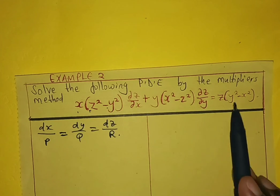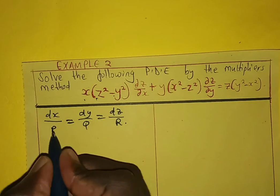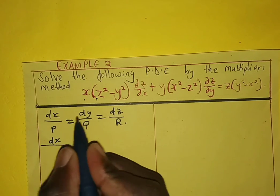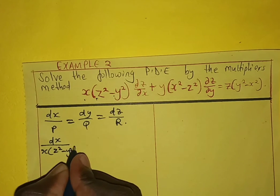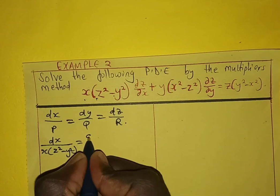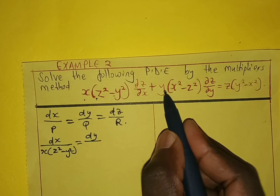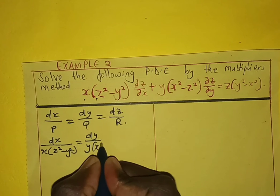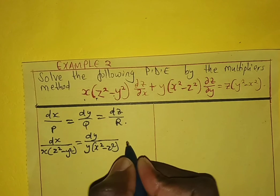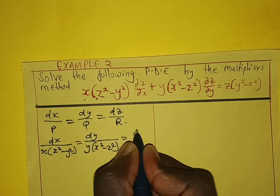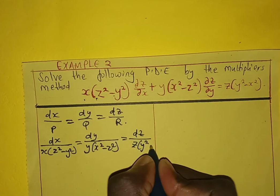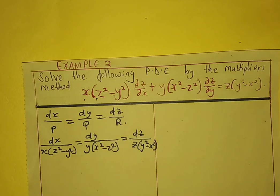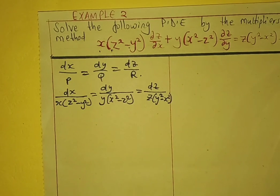We express the equation in auxiliary form, giving us: dx over P is x times (z² minus y²), equals dy over Q is y times (x² minus z²), equals dz over R is z times (y² minus x²).